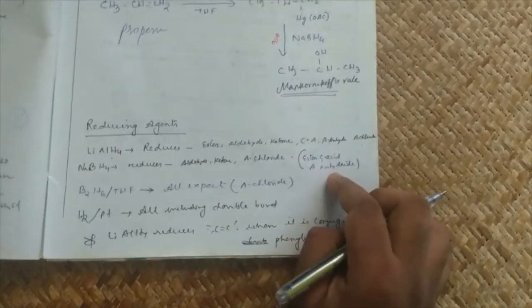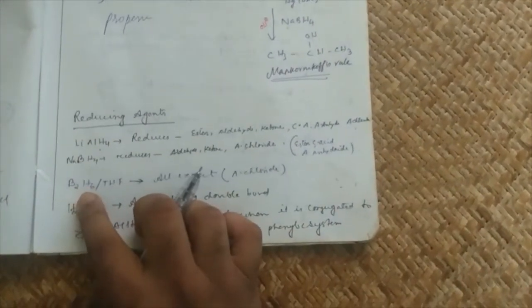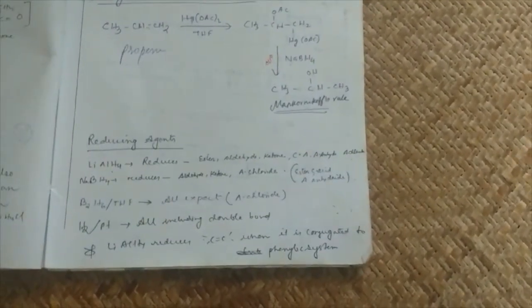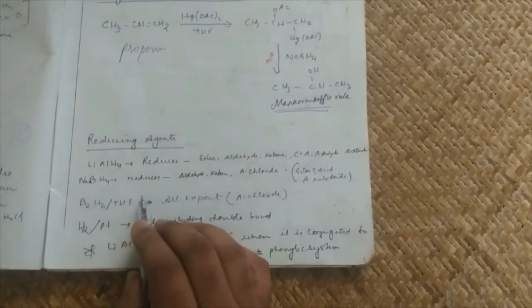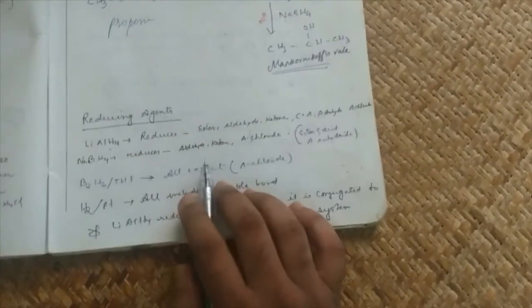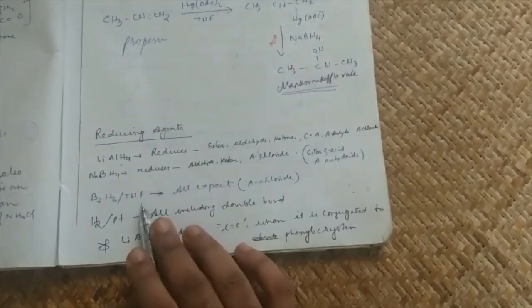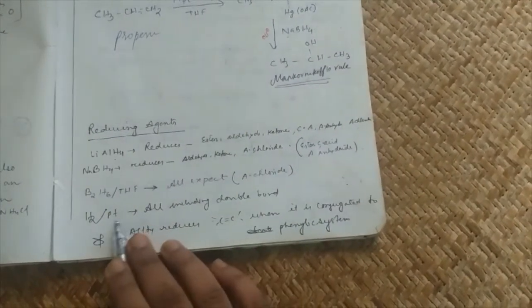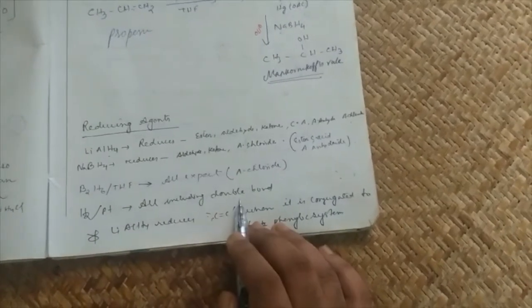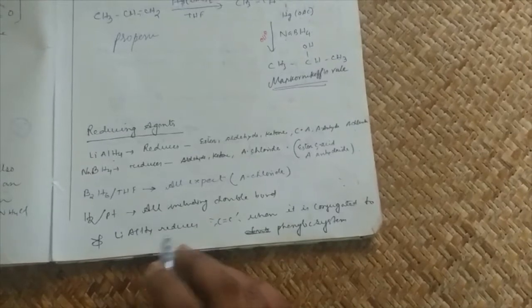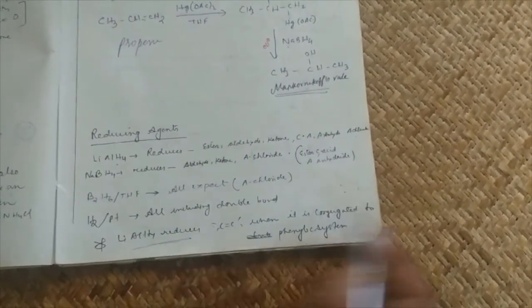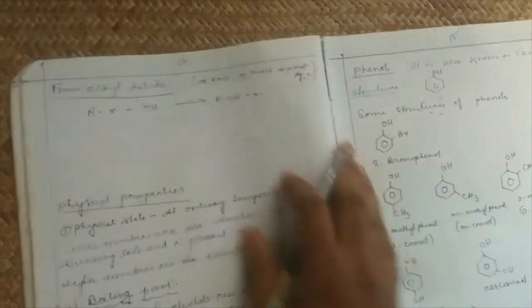Sodium borohydride reduces aldehyde, ketone, acid chloride. Important point: sodium borohydride does not reduce ester. Diborane in presence of tetrahydrofuran medium, all except acid chloride can be reduced. Catalytic hydrogenation using hydrogen, platinum, palladium can reduce including double bond.